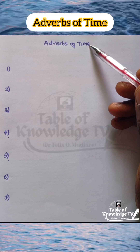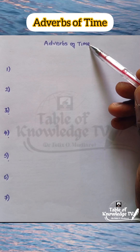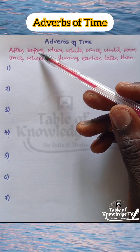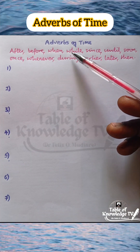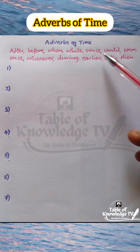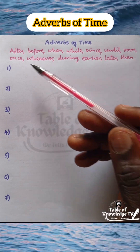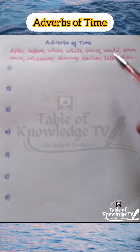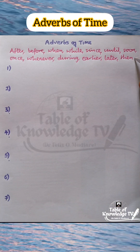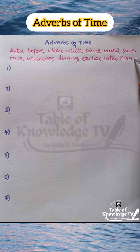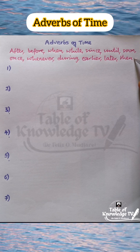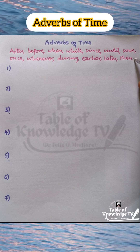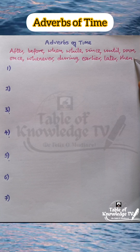Let's look at some examples of these adverbs. These include: after, before, when, while, since, until, soon, once, whenever, during, earlier, later, and then. These adverbs are very often used in complex sentences where they show the time relationship between the action in the main clause and that in the subordinate clause.